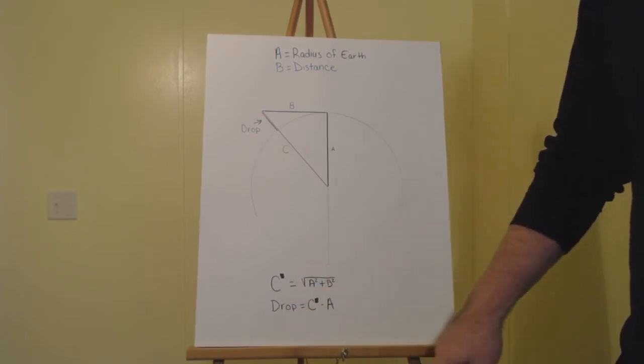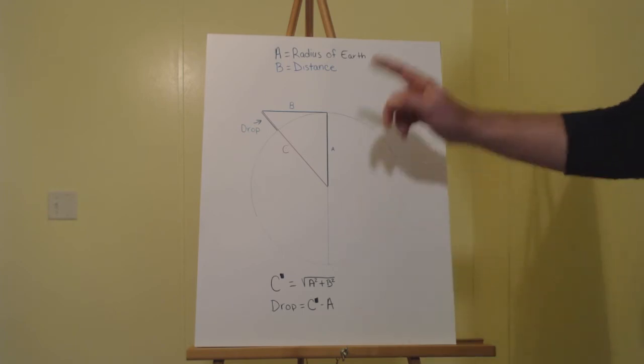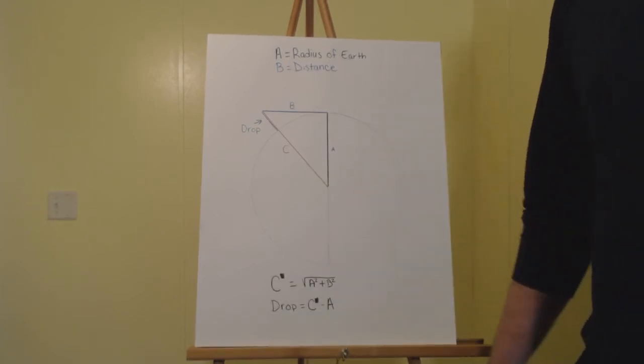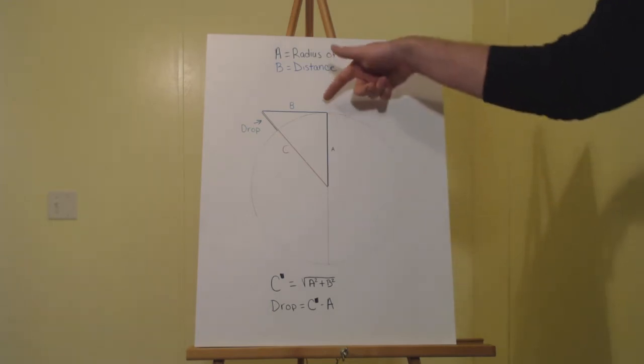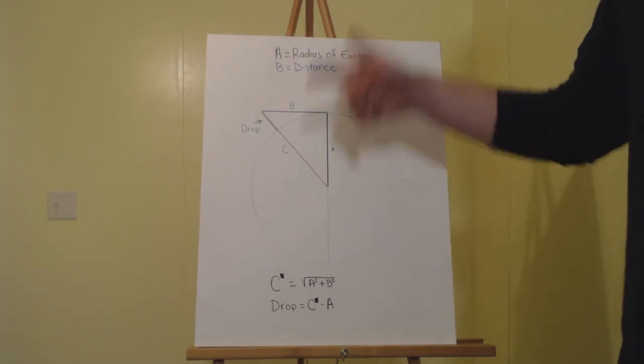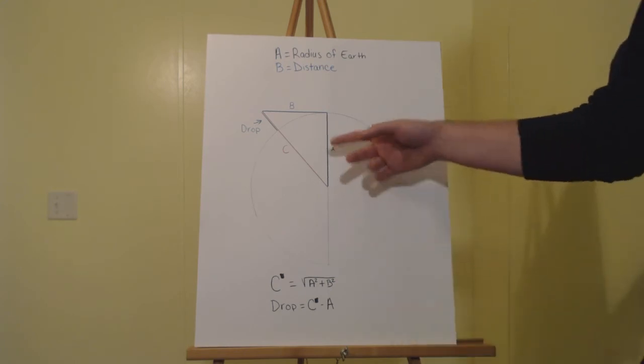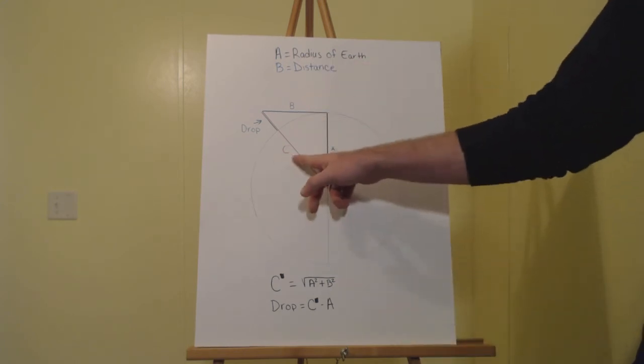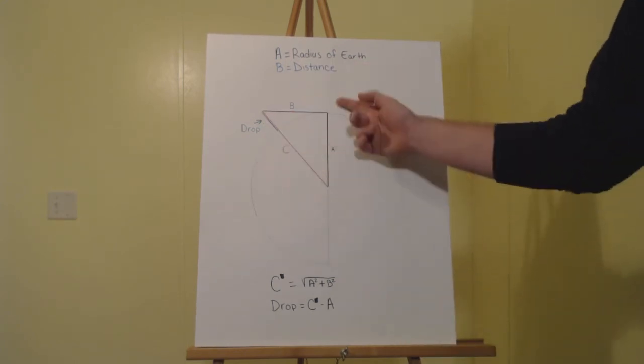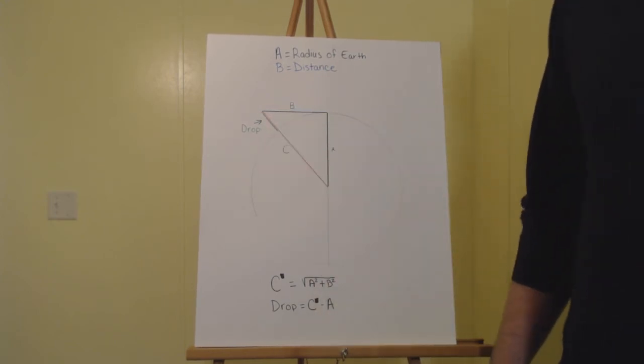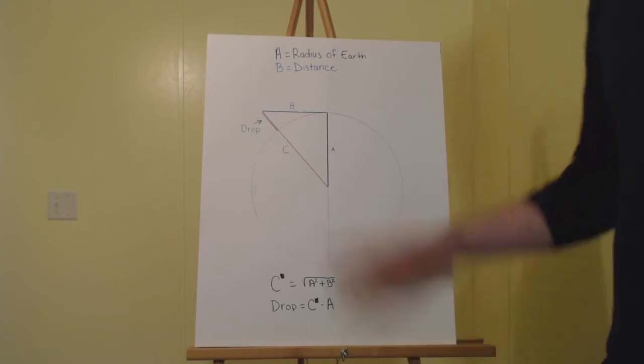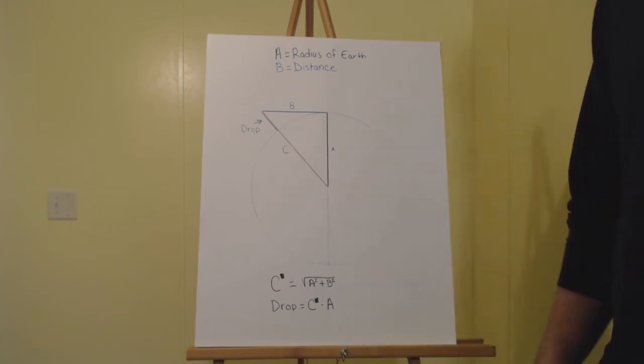So on all these examples, we're going to have an observer height of zero. So A is going to be radius of the earth. B is the distance you intend to measure above the surface of standing water. And if you take A squared, B squared, square root it, you'll get C. And if you take C minus A, you will be left with the drop. But for the purpose of the experiment we intend to do, these calculations are irrelevant, as you will see in a second.